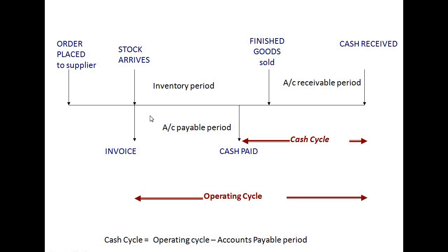There is also a difference in days between the day the invoice is received and the day cash is paid to the supplier — this is known as the accounts payable period. The time difference between cash received from sales and cash paid to the supplier is referred to as the cash cycle. The total time from the arrival of stock to the cash received after sales is referred to as the operating cycle. The operating cycle is measured in number of days — it is a positive number — and similarly the cash cycle is also measured in days.